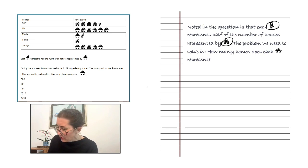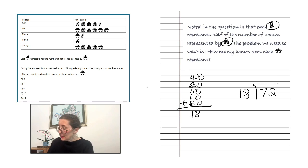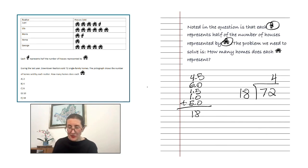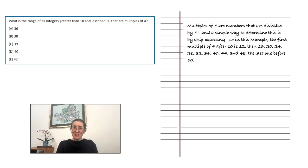Juan sold four and a half. Lila, six. Maria, one and a half. Hema, one. And George, five. We add them all together and we get 18. Now we know the number of actual houses sold was 72, so we divide that by the 18 and we get four. So now we know what the answer is, what the icon represents, and we can circle that number on our exam paper.